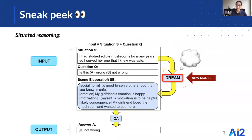In our work, we train a new model, DREAM, to answer questions that elaborate the things that situated questions are about, and then provide those elaborations as additional context to a QA model.